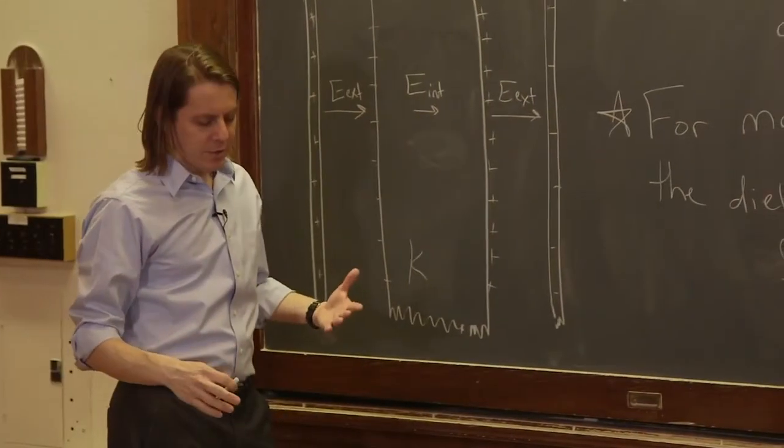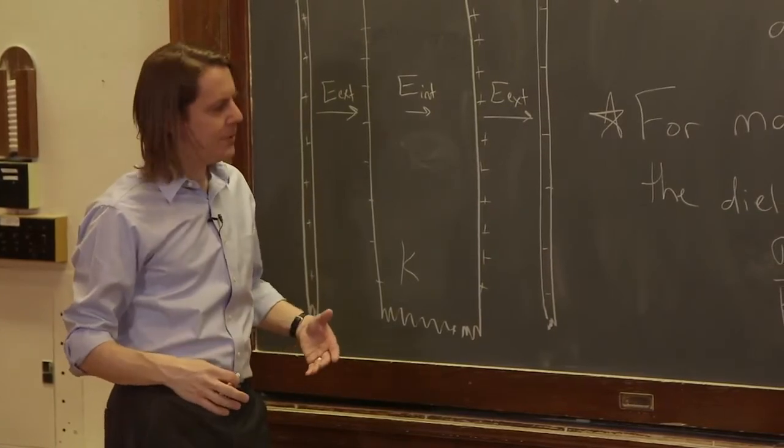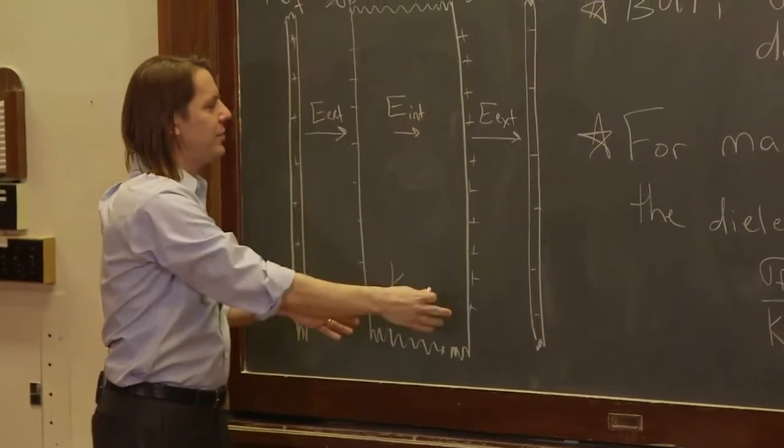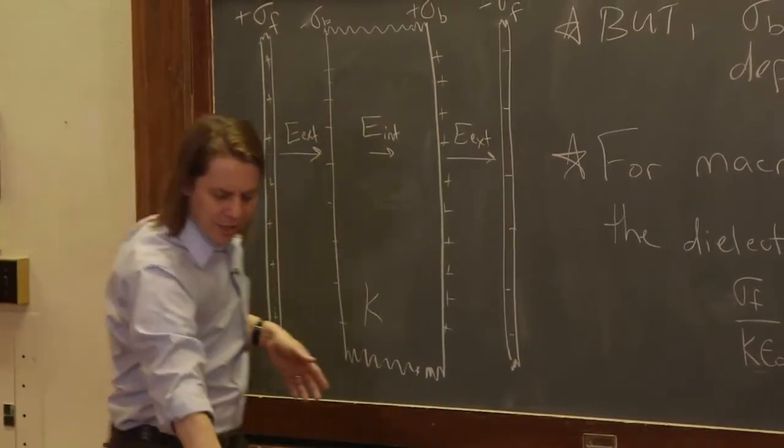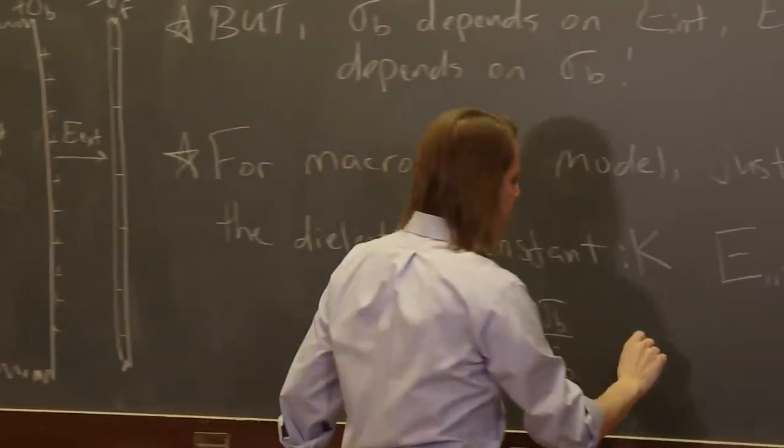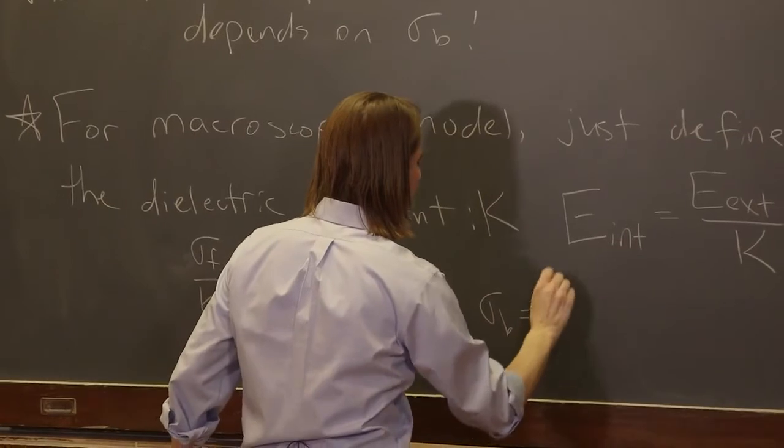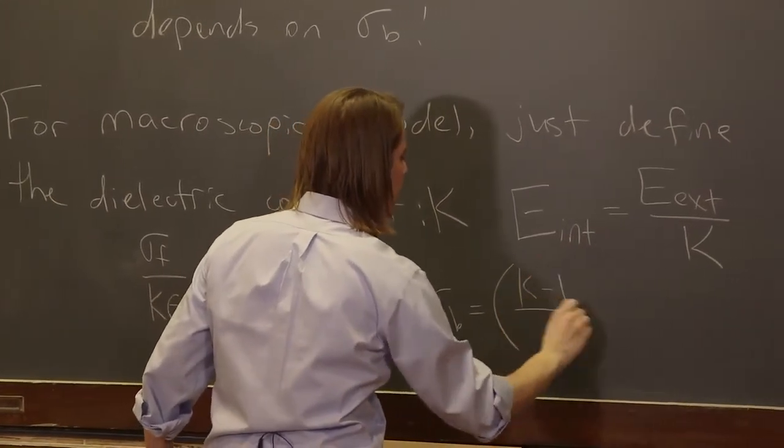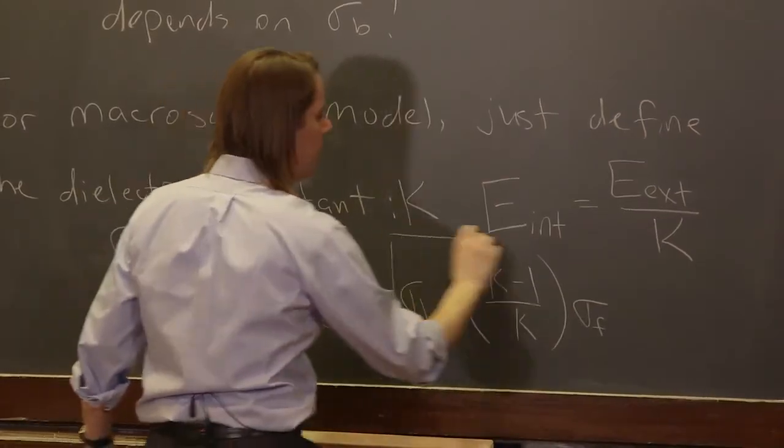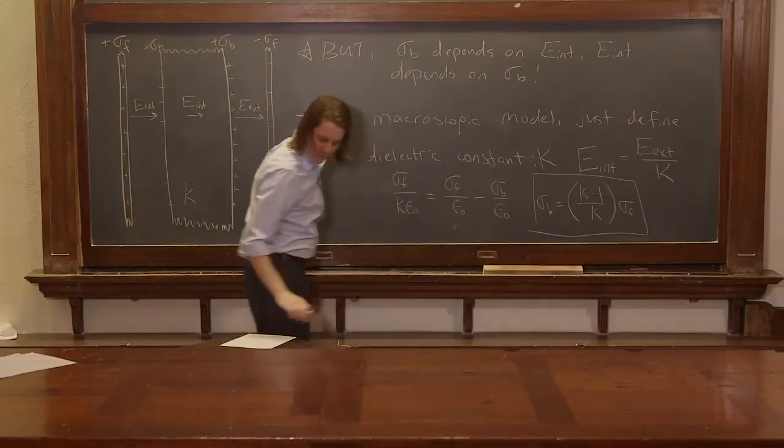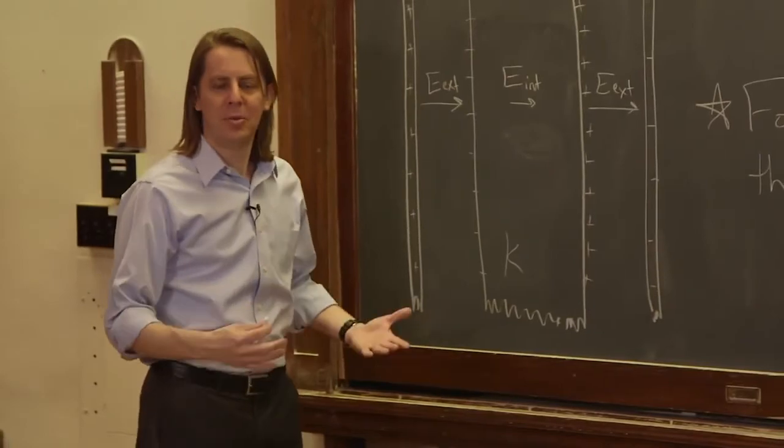And what you can do is you can flip these around to figure out what surface charge density will build up on the slab in terms of the free charge density. And you get that the sigma_b, the charge density that builds up, is (K minus 1) over K times sigma_free. So that is a little bit of an answer of what happens.